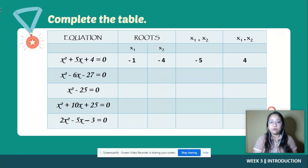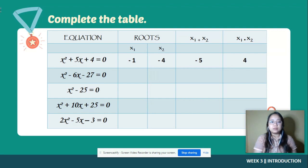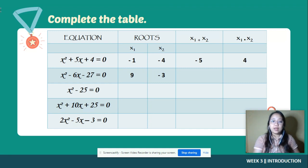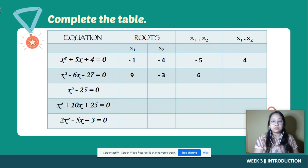Then we multiply negative one by negative four, which gives us positive four. Number two: x squared minus six x minus 27 is equal to zero. Since the equation is also factorable, we can again use factoring. Using that method we get positive nine and negative three. Nine plus negative three is positive six, and nine times negative three is negative 27.